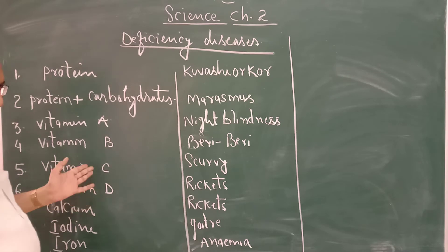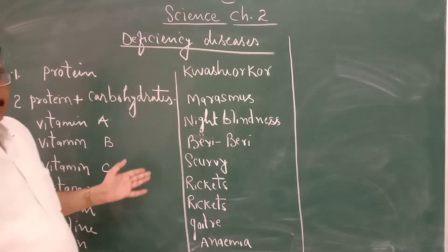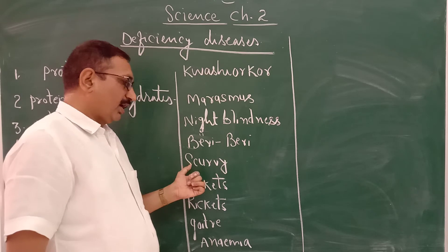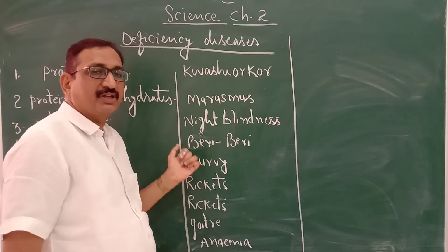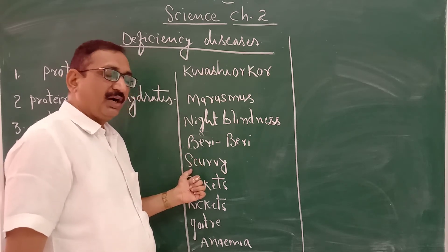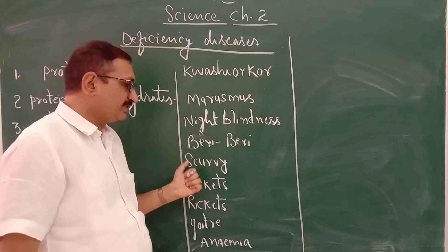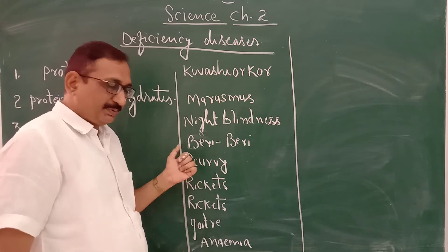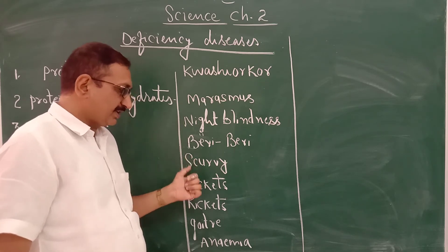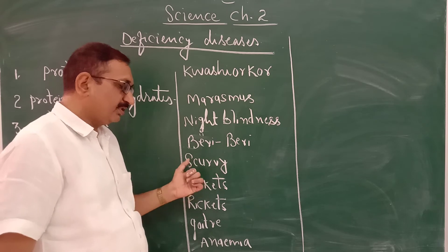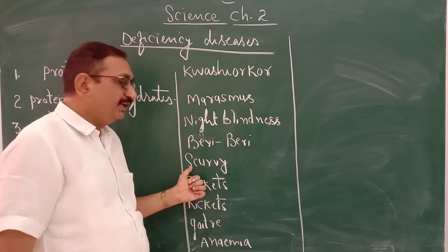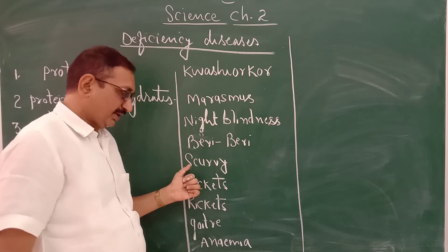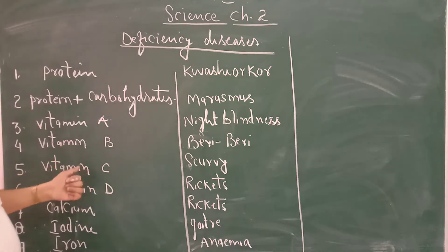Lack of Vitamin C causes a disease that is scurvy. I have discussed the symptoms of scurvy — I told that especially the bleeding starts from the gums. So the bleeding that starts from the gums is the indication of scurvy.